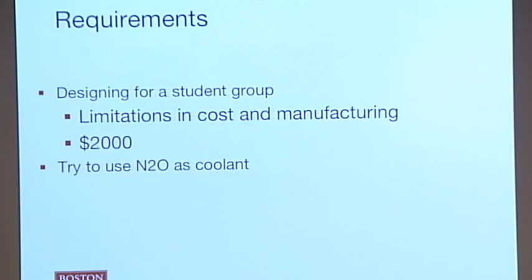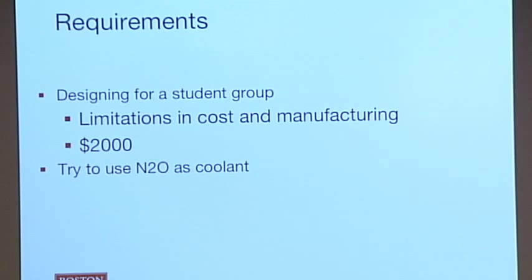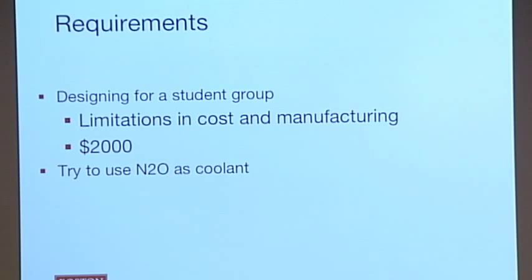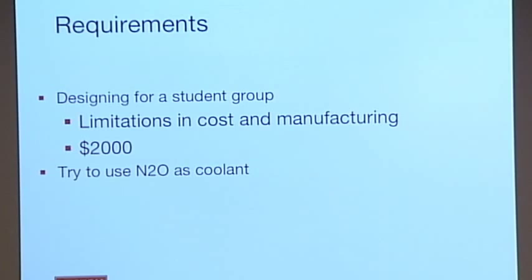Another thing to consider is that we're designing for a student group. We have a $400 budget from mechanical engineering, but we had a theoretical budget of $2,000. This just means that if we design something that takes $2,000 to make, they're okay with that and we're good to go.